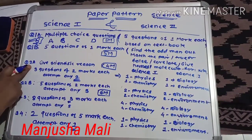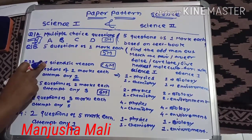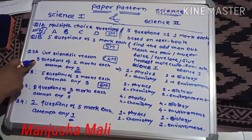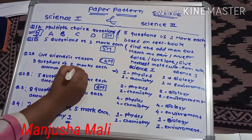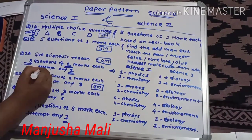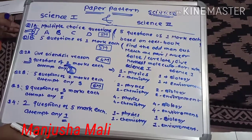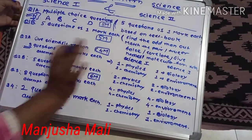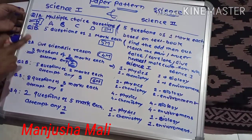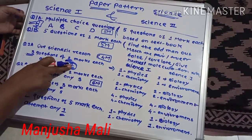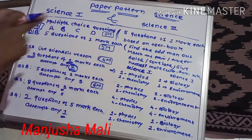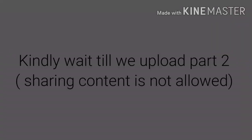Question number 2A is give scientific reason. Here there will be three questions of two marks each. Scientific reason is two marks and three questions, and you have to attempt any two. You have to solve two questions and the credit of marks for these questions is four marks total.